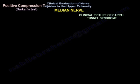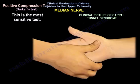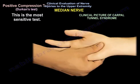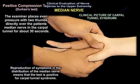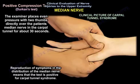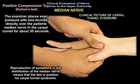Positive Compression Test — Durkan's Test. This is the most sensitive test. The examiner places even pressure with two thumbs directly over the patient's median nerve in the carpal tunnel for about 30 seconds. Reproduction of symptoms in the distribution of the median nerve means that the test is positive for Carpal Tunnel Syndrome.